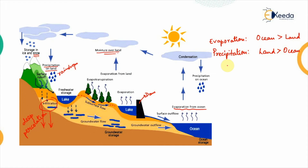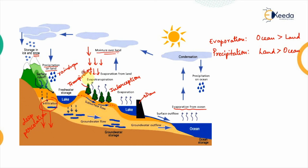The third component is runoff, and the fourth is transpiration. When rainfall happens over an area, the falling rainwater is intercepted by obstructions on the earth's surface — this is known as interception. The water used by plants is known as transpiration, and when plants evaporate that water after using it, that is known as evapotranspiration — a combination of evaporation and transpiration.